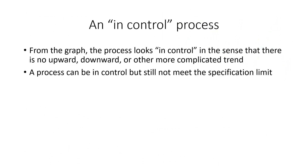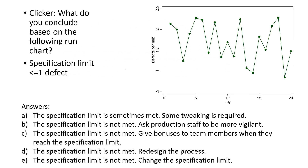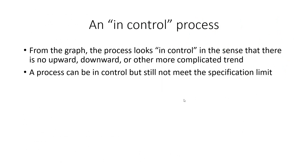An in-control process is a process that doesn't drift up or down or do strange things. From the previous graph, the process was in control in the sense that it wasn't trending upward or downward — it was variable, mostly above the specification limit, but it wasn't going anywhere. It was stable — we say in control. A process can be in control but still not meet the specification limit.